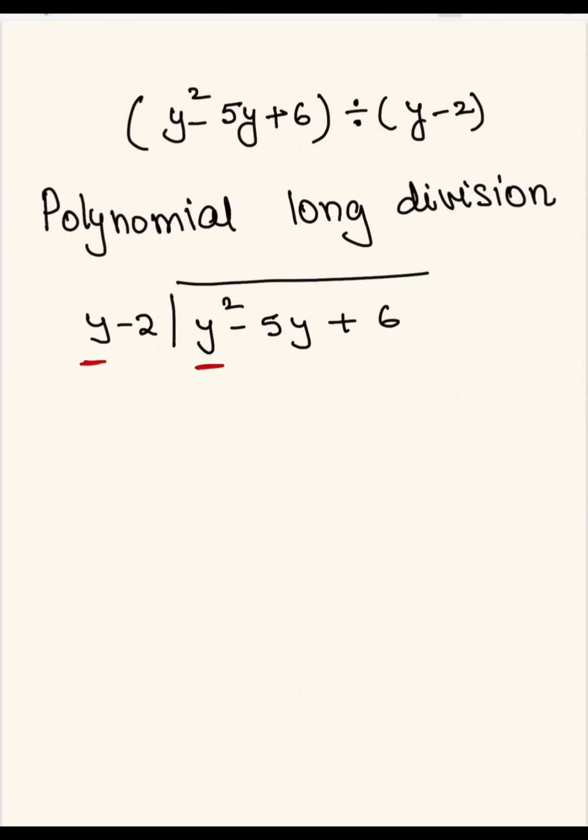To start the polynomial division, you want to make a check first. You want to make sure that the polynomial is written in standard form. And what is the standard form? Writing from the highest power to the lowest power. And then you're going to check if any term is missing.